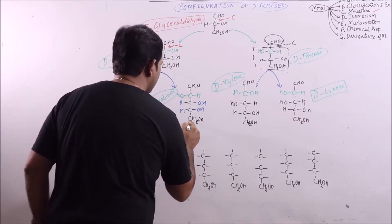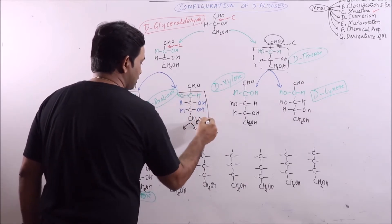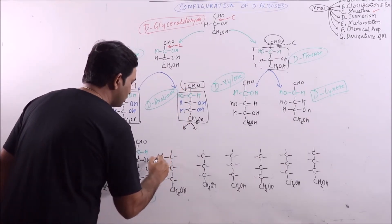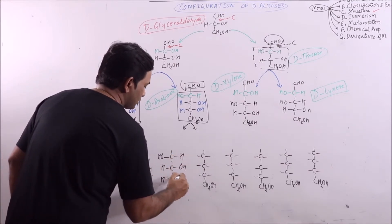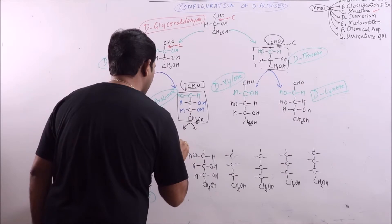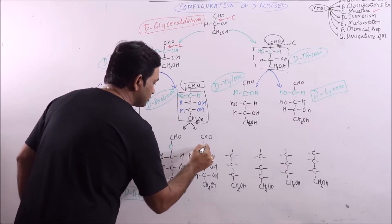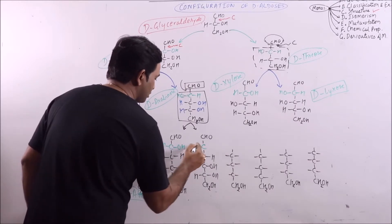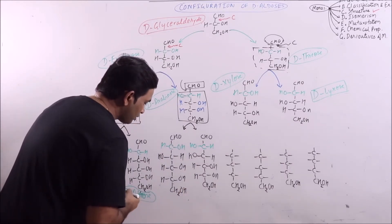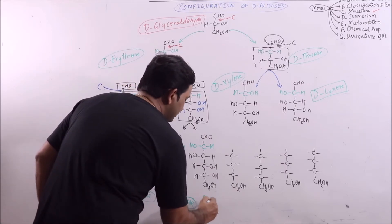In the same way, if Kiliani-Fischer Synthesis proceeds on D-Arabinose, the new carbon is added — this portion will remain intact and this will remain intact — and the new carbon is added in this position. This gives D-Glucose, the most important hexose, and D-Mannose.